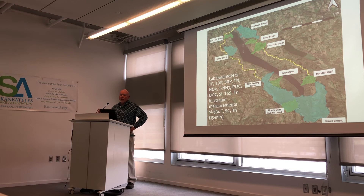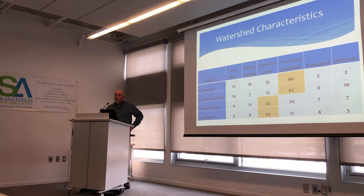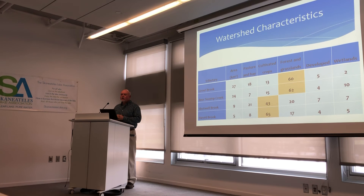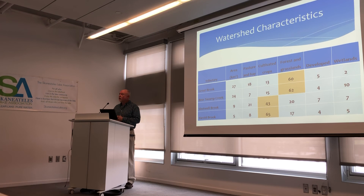The parameters measured are listed, and in the four major tributaries we deployed pressure sensors to get 15-minute stage measurements as well as water quality data. Focusing on the four major tribs, we're looking at their area and the percentage of land use devoted to pasture and hay, cultivated crops, forest, developed areas, and wetlands. We see quite a range of land use across these four watersheds — from Grout Brook and Bear Swamp, which tend to be highly forested, to Shotwell and Herald Brook, which have considerably more agricultural land use.